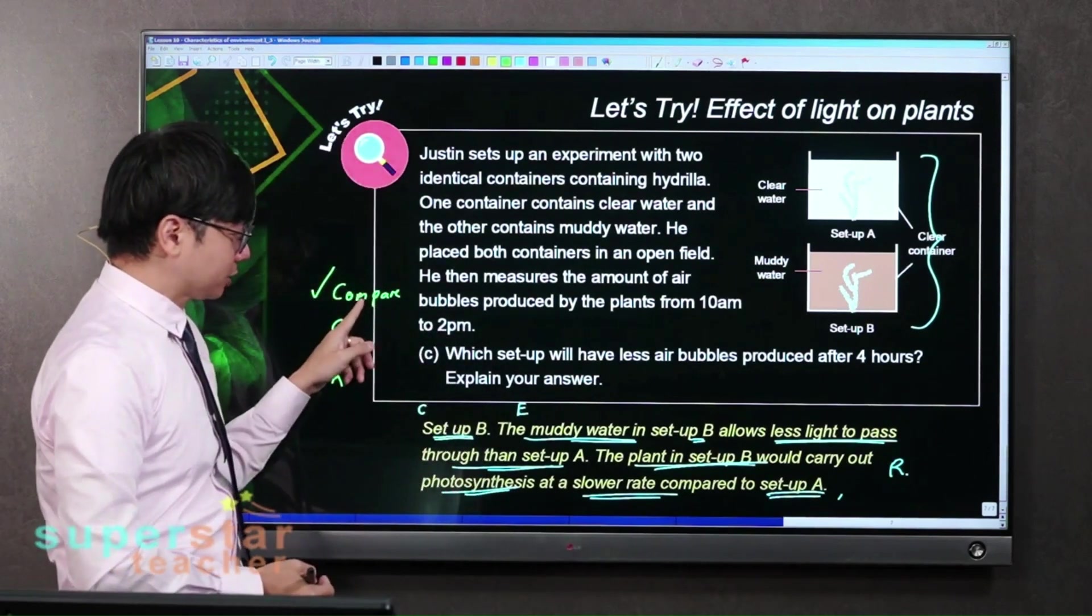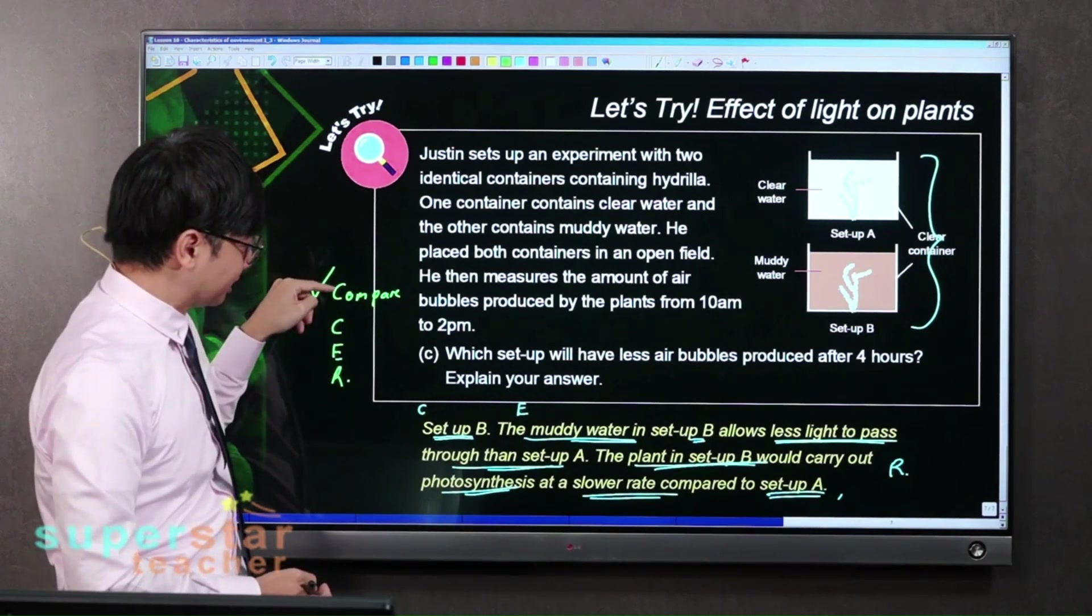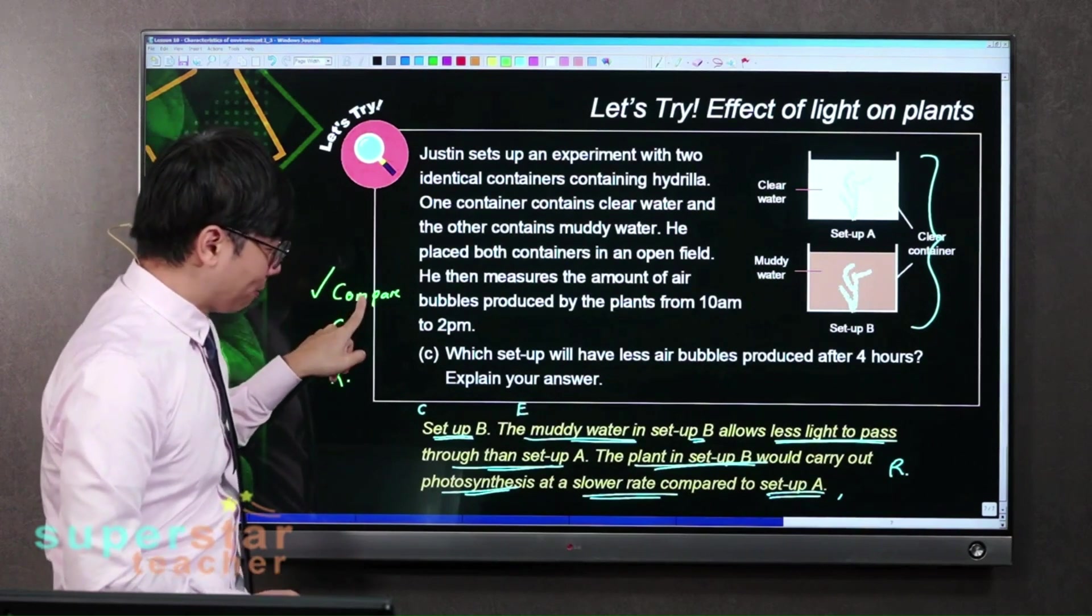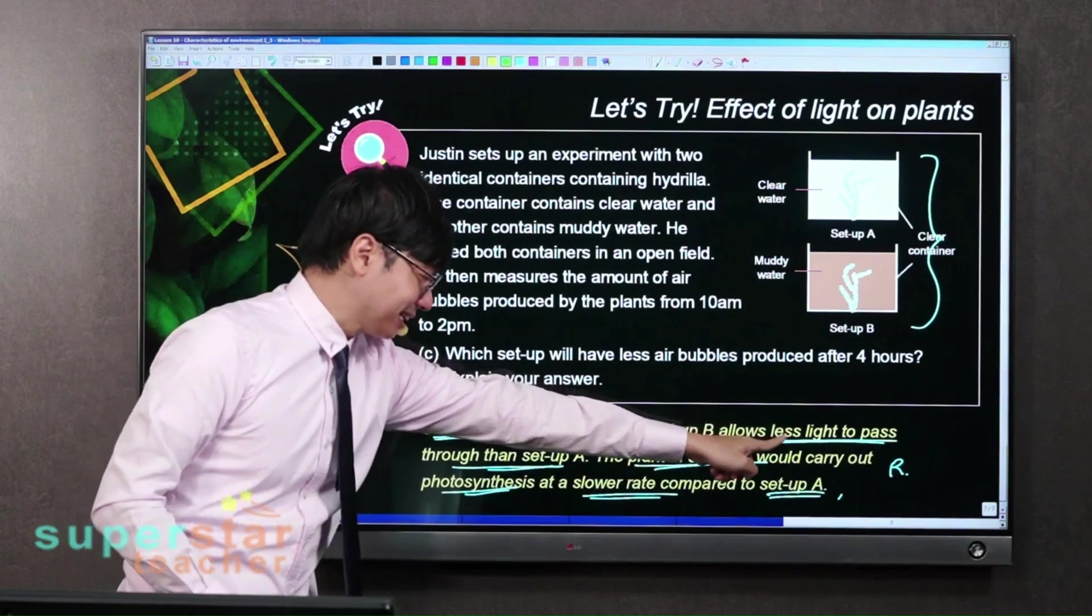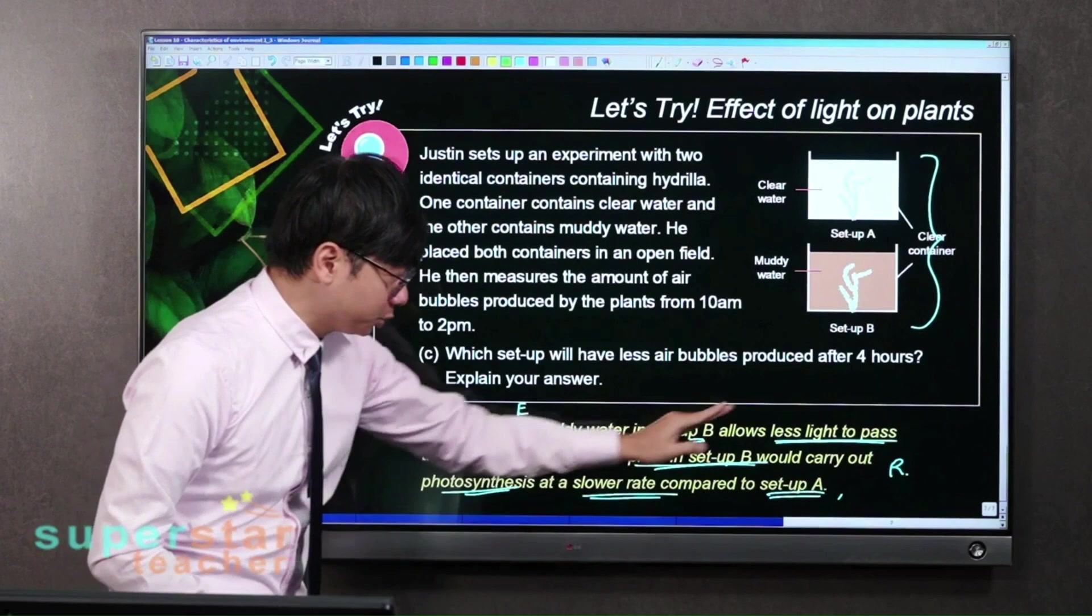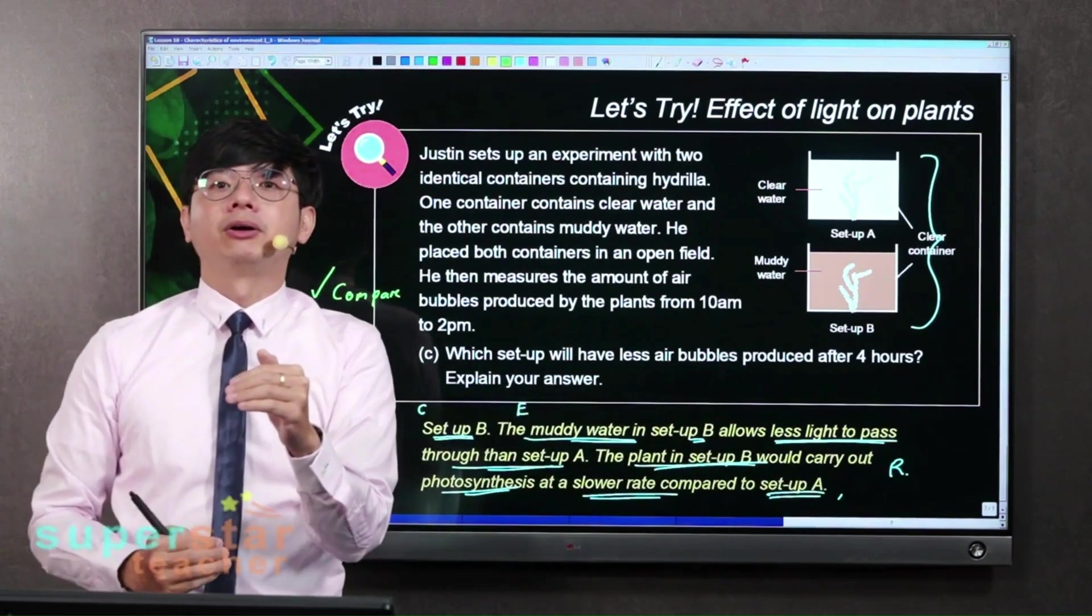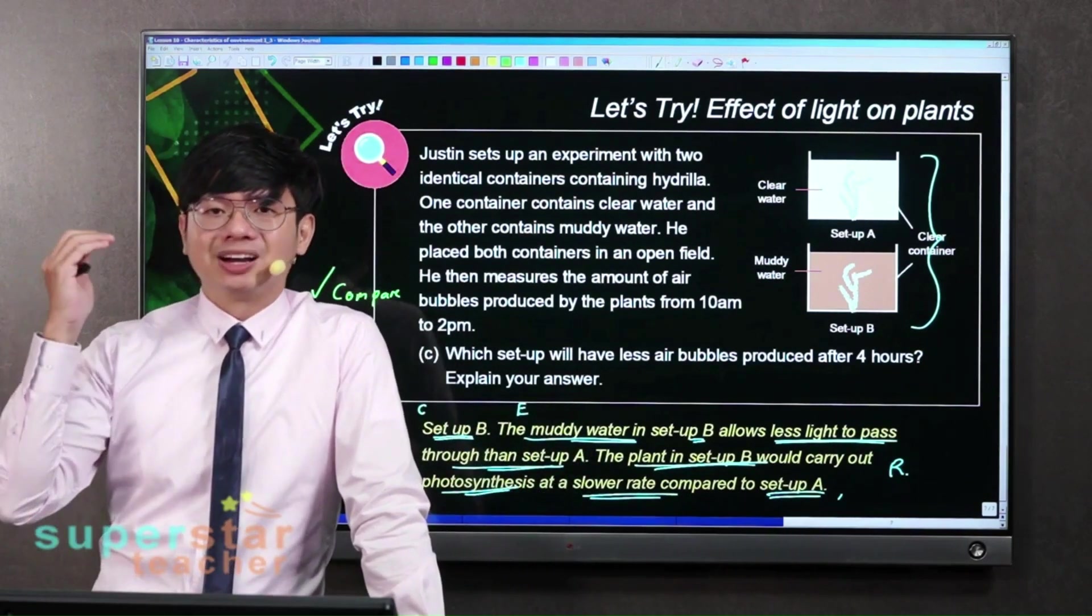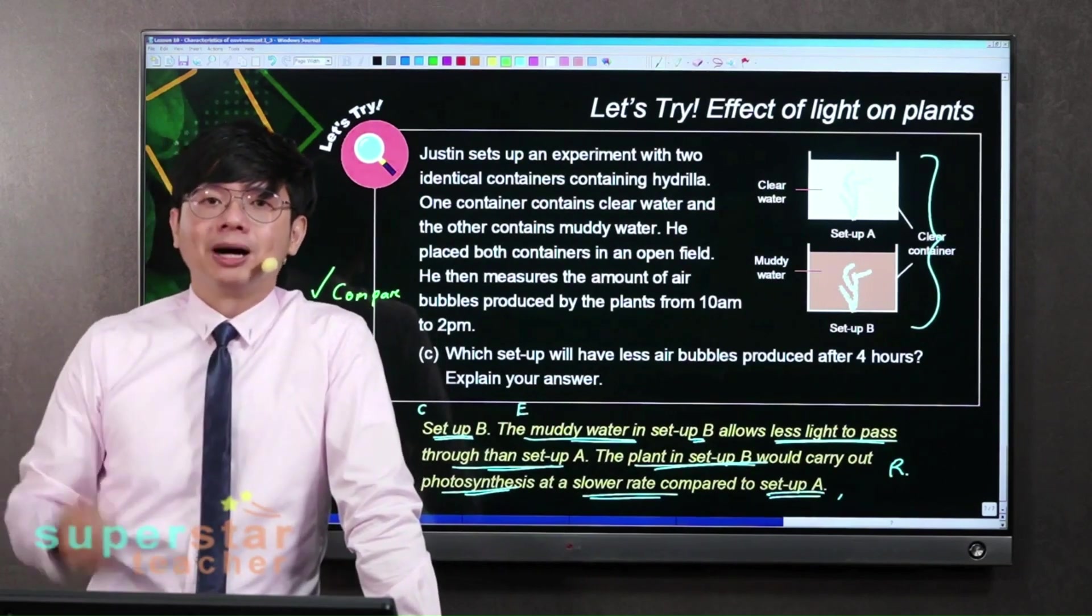And this compare is important. But Mr. O always asks you all to do the comparison, right? So this actually falls under the C that comes before the claim. And this compare is important because you look at how I answer: less light, then carry out photosynthesis at a slower rate. You see, these two are the comparative terms. So we are actually doing C-C-E-R. So please take note of this because in PSLE, most of the questions you have to answer in this C-E-R or C-C-E-R format so that you can get the full marks.